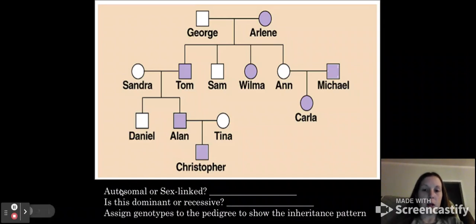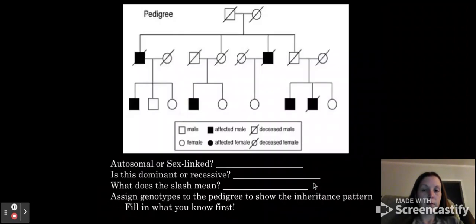So if you look at this, I want you to pause this video after I read these and try these questions. So is this autosomal or sex-linked? Is it dominant or recessive? And assign the genotypes to the pedigree to show the inheritance pattern. So I want you to try that really quick. All right. So, again, pause the video and try this one. Remember, lines that are through them, that it has it on here on this chart. So pay attention to that.